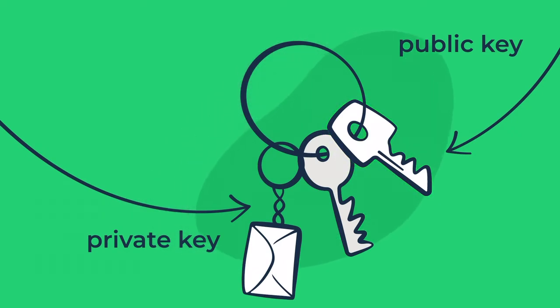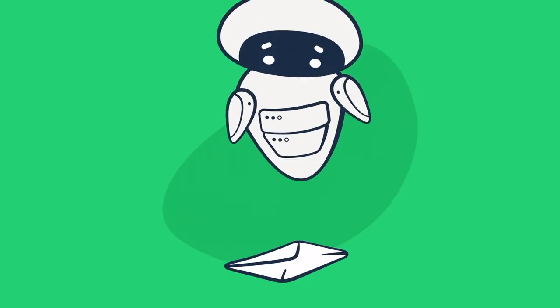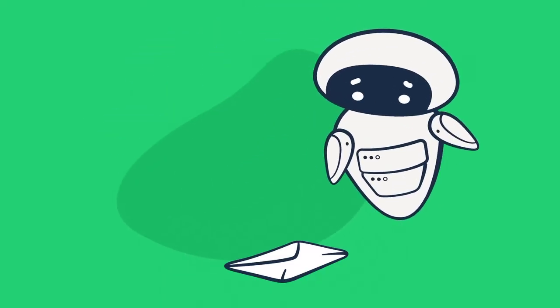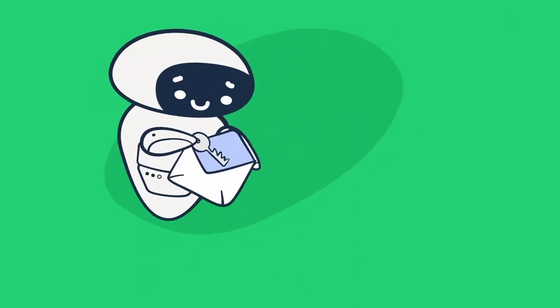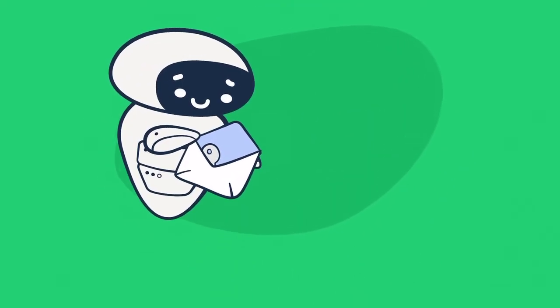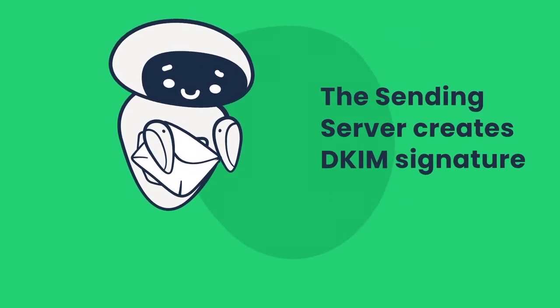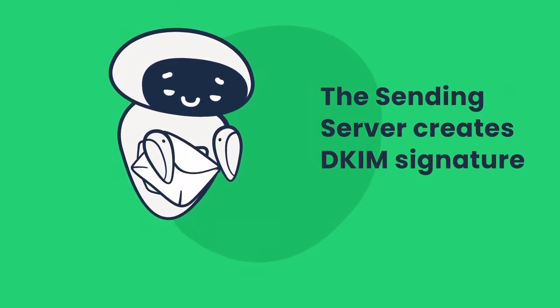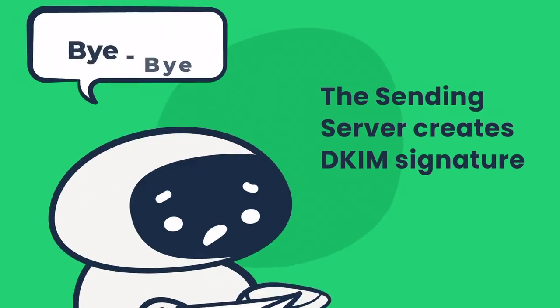Use keys provided by your email provider. When you send an email, the DKIM email security magic begins. The sending server creates a DKIM signature — a body and headers of your message attached with a private key.